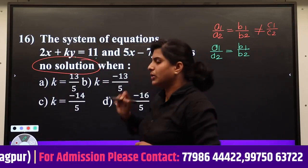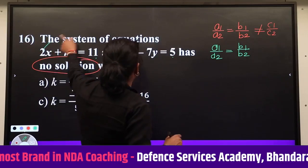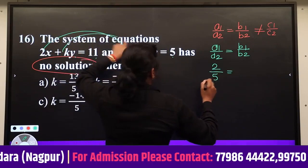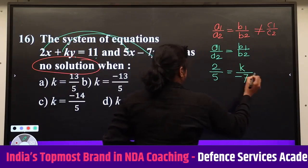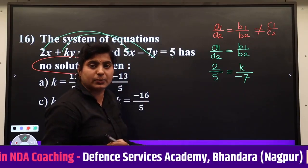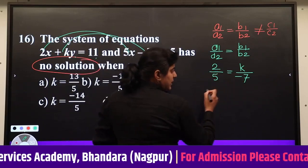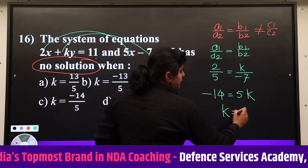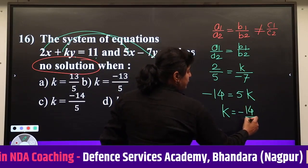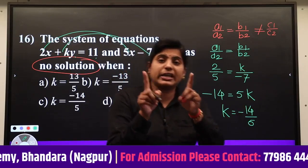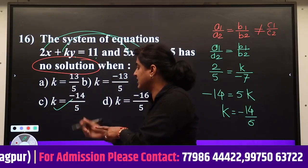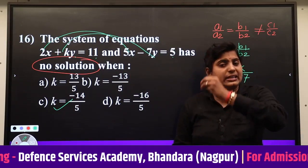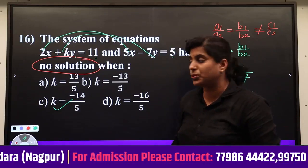The values give us 2/5 = k/(-7). Cross-multiplying: 2×(-7) = -14 = 5×k, so the value of k = -14/5. This is the required value of k for which the given linear equation system has no solution.